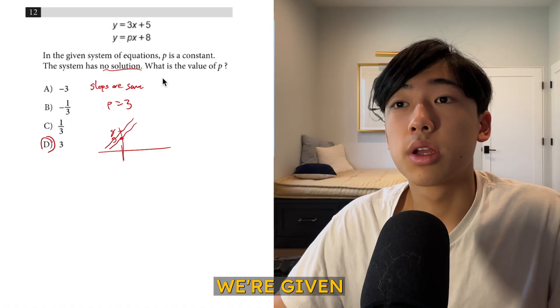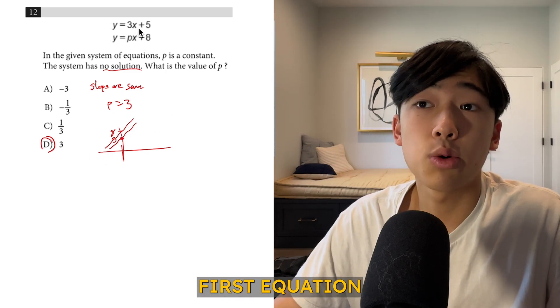Now let's go on to number 12. Here, we're given that there's supposed to be no solution. And what you need to remember is for a system of equations to have no solution, it means that when they continue on forever, they will never intersect, which means that the slopes have to be the same. So since the slope of the first equation is 3, the second equation also has to be 3.